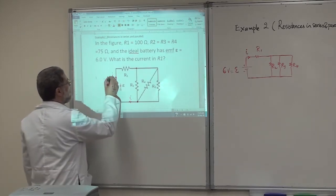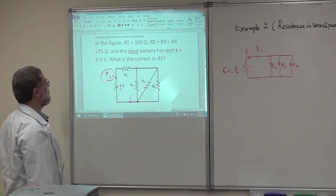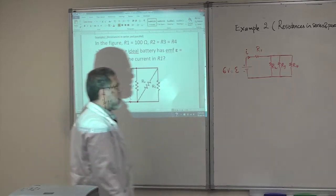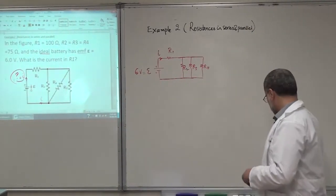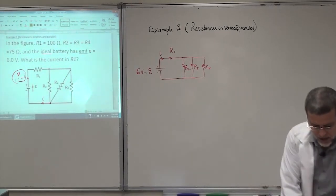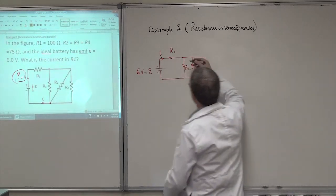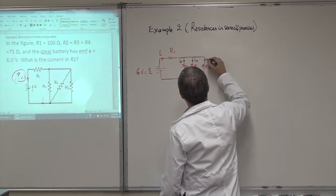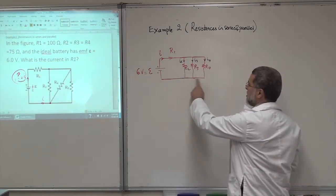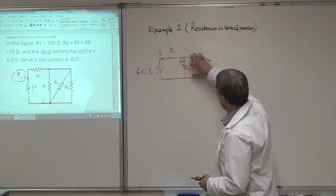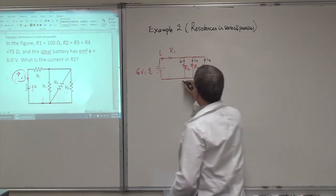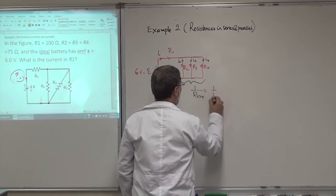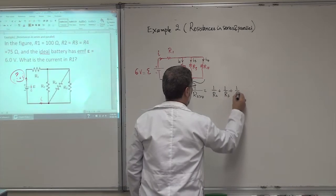The EMF is 6 volts, and we want the current I in resistance R1. We have R1 = 100 ohms, and R2, R3, R4 are all 75 ohms. These three resistances are clearly in parallel. So I can find their equivalent: 1/R₂₃₄ = 1/R2 + 1/R3 + 1/R4. Since they are equal, this equals 3/R2.